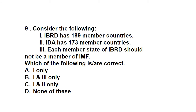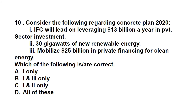Question nine: consider the following statements. IBRD has 189 member countries — true. IDA has 173 member countries — true. Each member state of IBRD should NOT be a member of IMF — this is false. Each member state of IBRD should BE a member of the IMF. This is an important fact that may be twisted in exams. So the correct answer is C, statements one and two only.